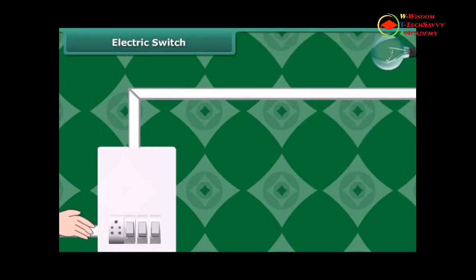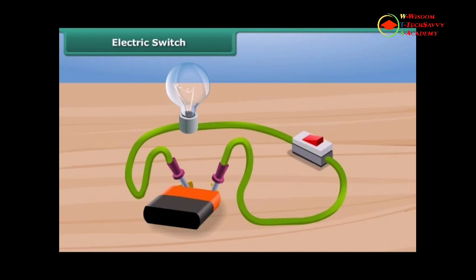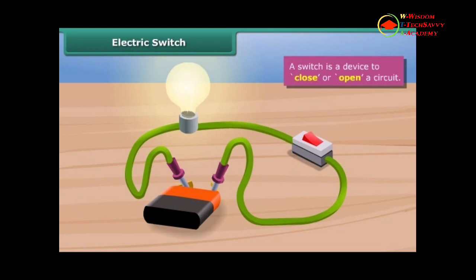A switch for a bulb is pressed down to complete a circuit. The bulb glows. To put the bulb off, we press the switch up. This breaks the circuit and the bulb glows no more. The switch is so made that under normal conditions the circuit remains open. The current does not flow through the circuit. When we press the other end of the strip on the switch, it gets connected to close the circuit. The current flows through the circuit and the bulb starts glowing. A switch is a device to close or open a circuit.